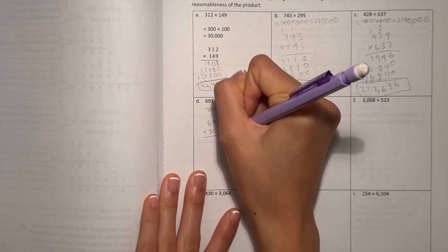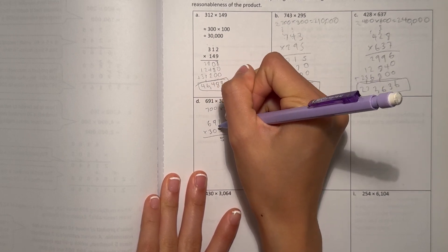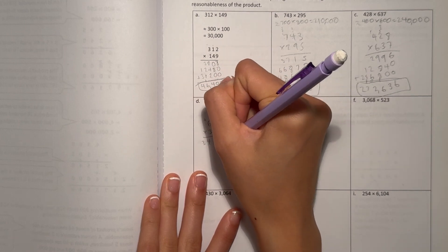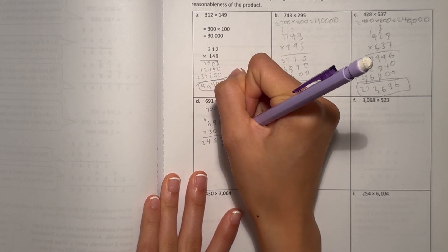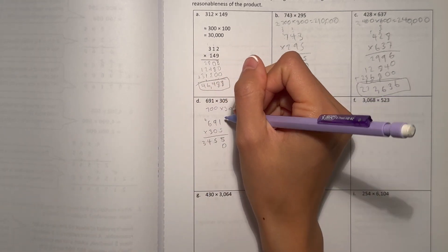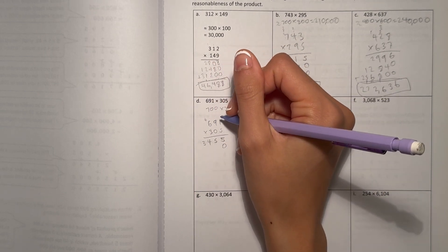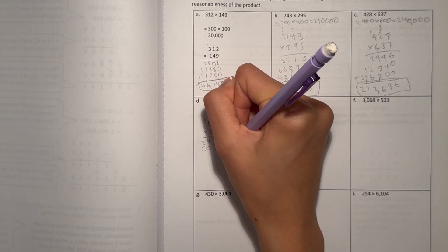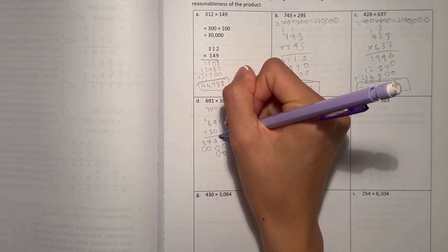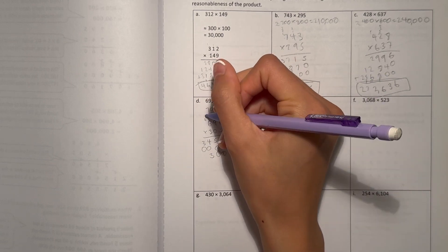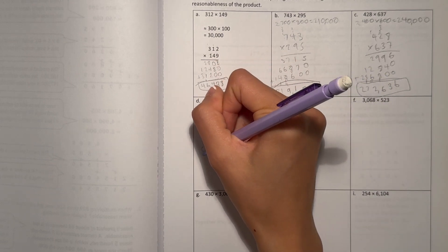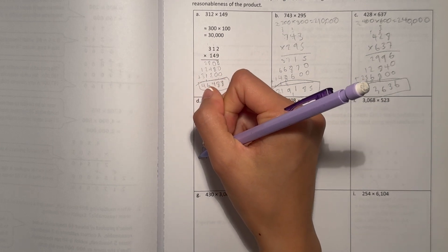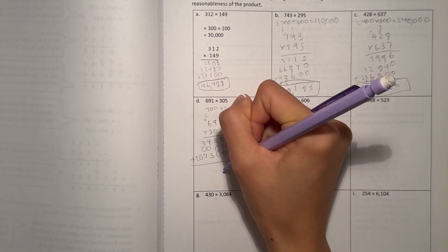1 times 5 is 5. 9 times 5 is 45. 6 times 5 is 30, plus 4 is 34. Add a 0. This part actually would be all zeros. So we don't really have to do that part, but I'll just write it to show it out. Next part would be 0 is 0. 3 times 1 is 3. 3 times 9 is 27. And 3 times 6 is 18, plus 2 is 20.